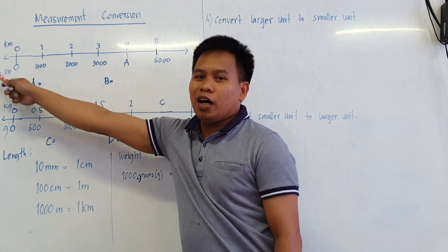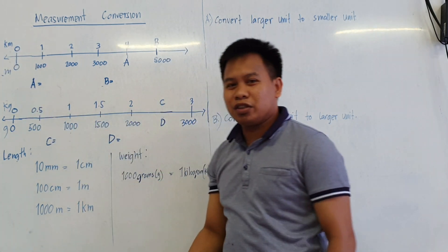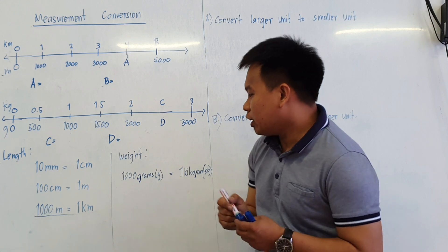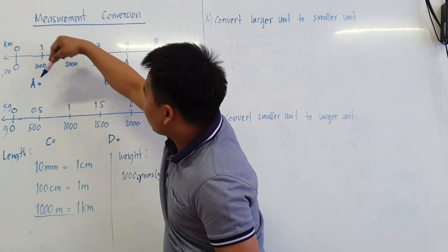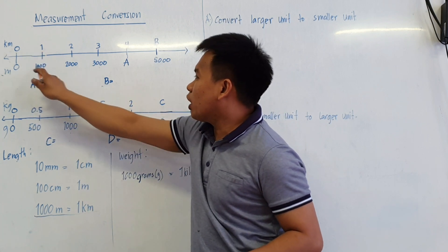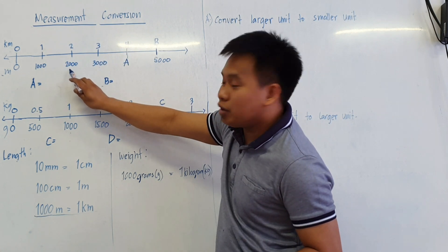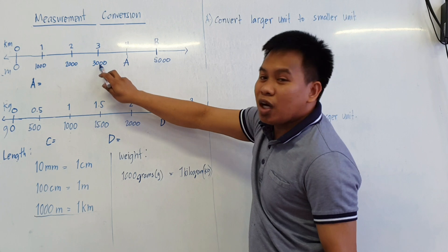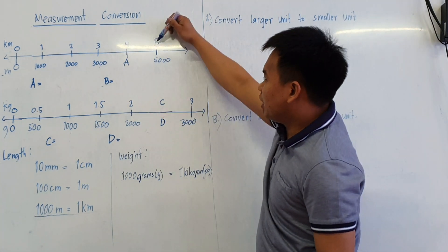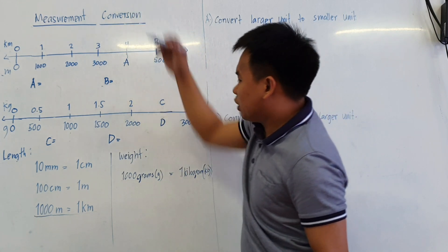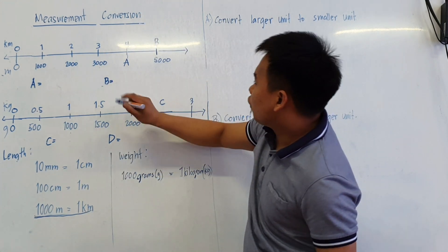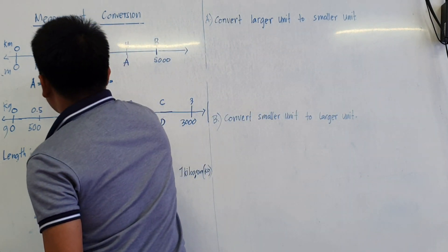In our number line, we have kilometer and meter, so we'll focus on those. Since 1,000 meters equals 1 kilometer, these are equivalent. So 1 kilometer is equivalent to 1,000 meters, 2 kilometers equals 2,000 meters, 3 kilometers equals 3,000 meters, and 4 kilometers equals A. And B equals 5,000 meters. Since A is 4,000 meters, and 1,000 equals 1 kilometer, A is 4. So that means A is 4,000 meters. Don't forget the unit.